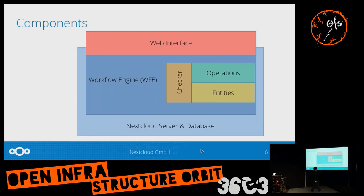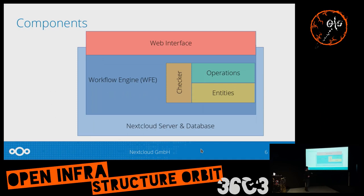The entities represent the trigger causing the flow to happen. The checkers are there to check the constraints — the criteria you configured. And the operations are the actual action. These are the terms we use in the code, but basically it's events and actions. On top of it, of course, there's a web interface — credit to my colleague Julius who did everything user-visible on the front end.